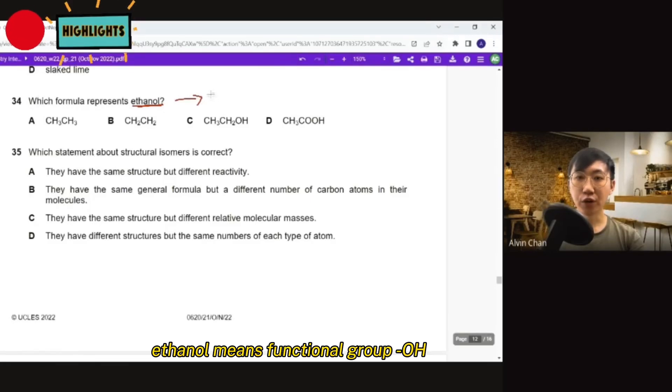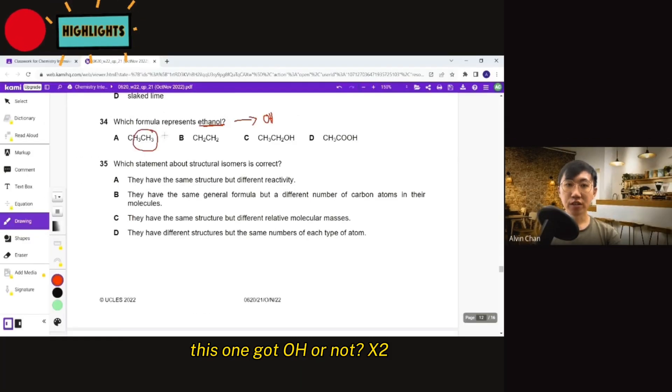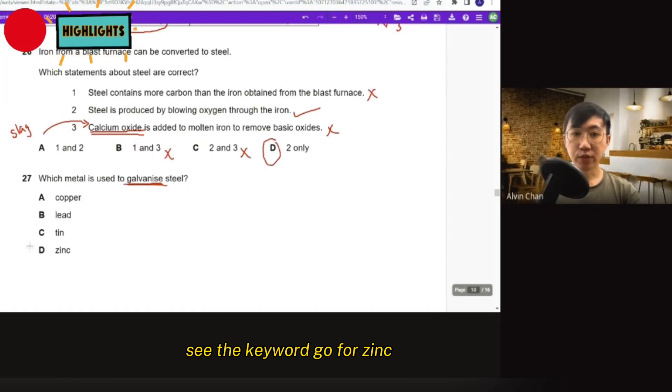Ethanol means functional group OH. This one got OH or not? Out. This one got OH or not? Out. This one got OH. Macam yes. See the keyword go for zinc. Done.